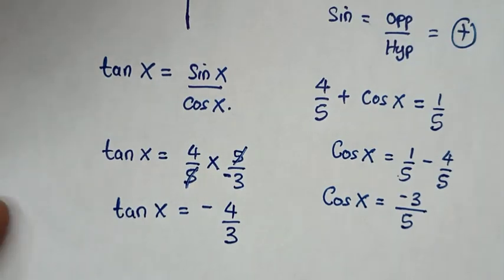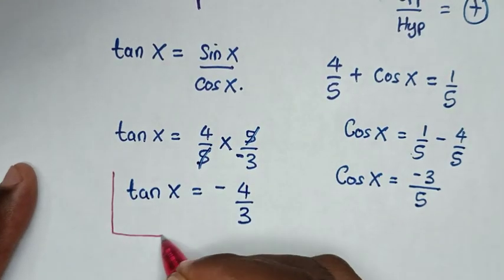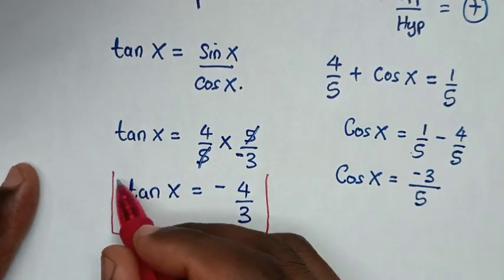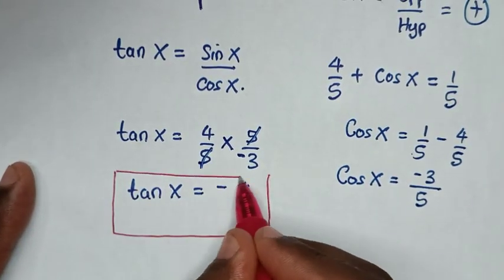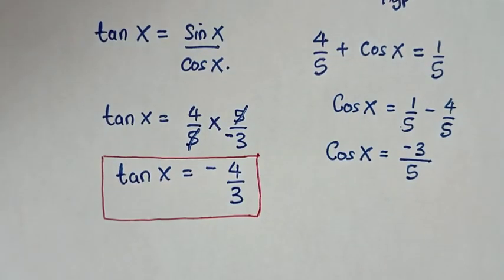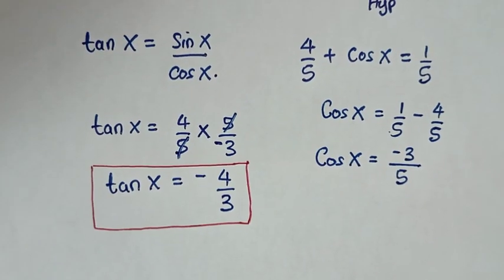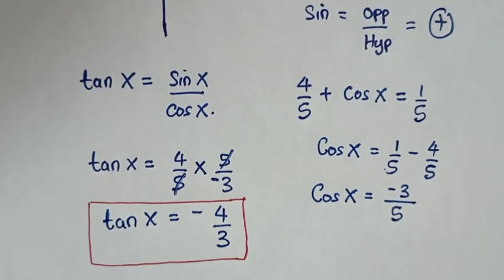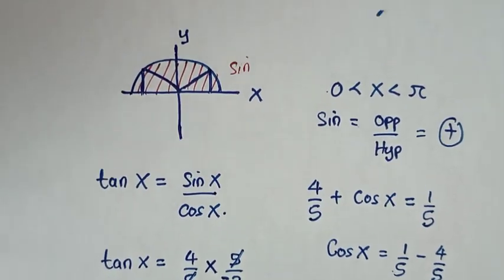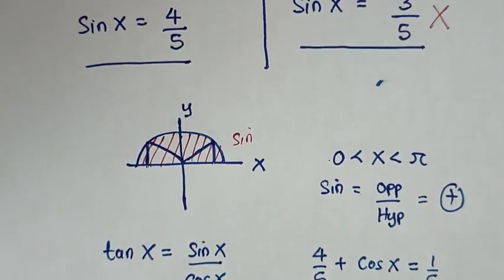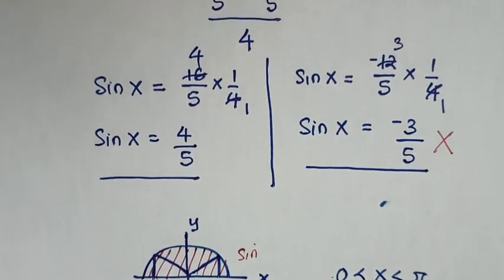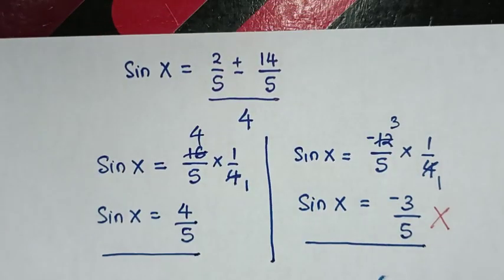Therefore, tan x equals negative 4 over 3 is our final answer. Thank you for watching. Don't forget to subscribe to my channel, and see you in the next video. Bye bye.